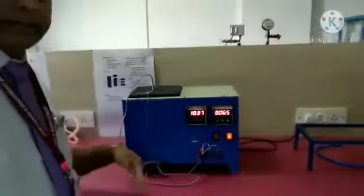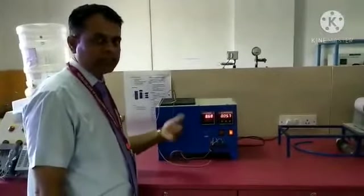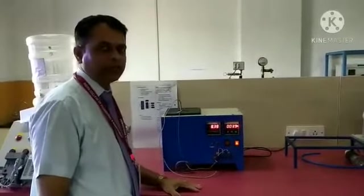In this way we can take the readings for 60 degrees, 70 degrees. We will take 5 readings and put it in the table and do the calculations.